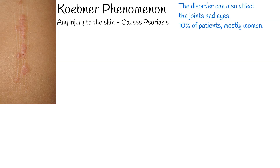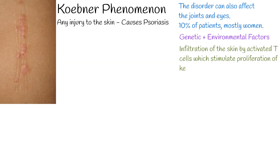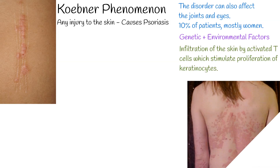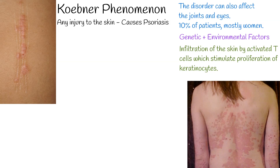Psoriasis is generally thought to be a genetic disease that is triggered by environmental factors. The exact etiology is unknown, but it is considered to be an autoimmune disease mediated by T lymphocytes. The pathophysiology involves infiltration of the skin by activated T cells which stimulate proliferation of keratinocytes, and this dysregulation in keratinocyte turnover results in the formation of thick plaques.